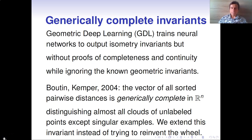The related area of geometric deep learning trains neural networks to output isometry invariants, but doesn't provide proofs of completeness and continuity. So one of the simplest invariants known for nearly 20 years is the vector of all sorted pairwise distances, and this is a very strong invariant. It is generically complete in the sense that it distinguishes almost all clouds of unlabeled points in Euclidean space Rn, except possibly singular examples.